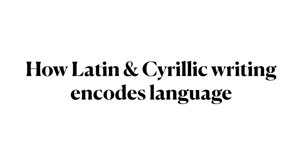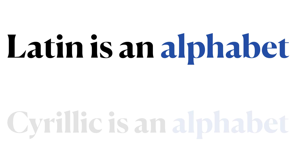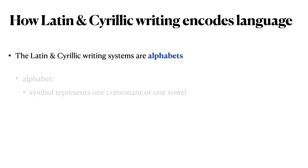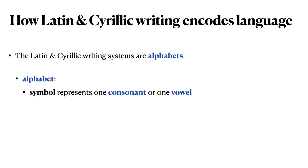Let's review. The Latin and Cyrillic writing systems encode language by representing sounds. Latin is an alphabet; Cyrillic is an alphabet. What does it mean to be an alphabet? An alphabet is a system where each symbol — each letter — represents one sound, and those sounds could be either consonants or vowels.